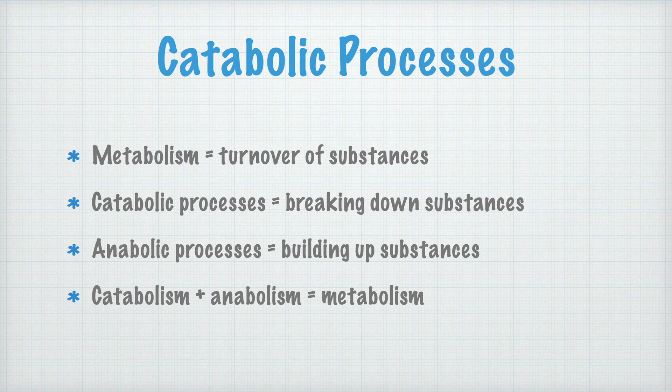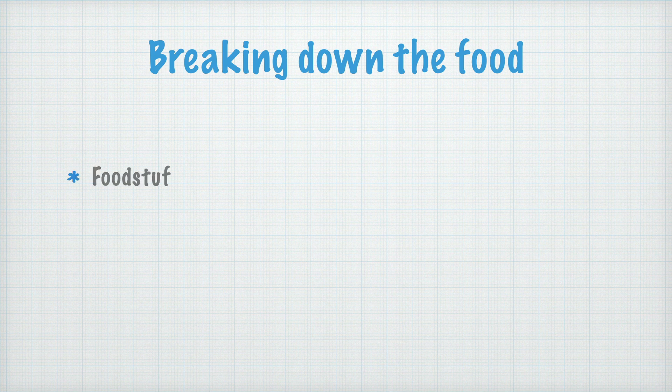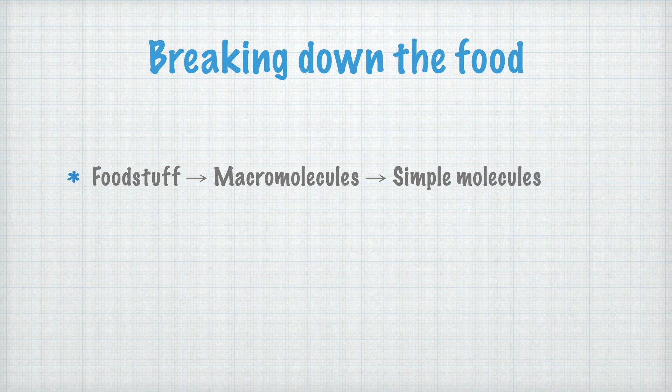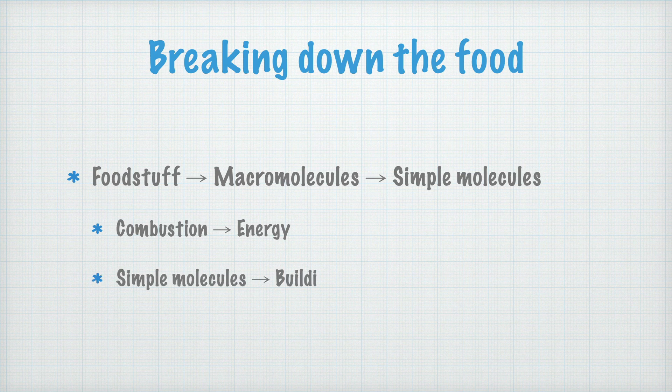In the following videos, we'll go much deeper into them. The catabolic processes are mainly about breaking down or degrading the food that we eat. The food mainly consists of macromolecules — gigantic molecules like starch, fat, and proteins. They are broken down into simple, or at least simpler, molecules that can either be used for combustion, from which we get energy, or as building blocks for new macromolecules that the cell needs.